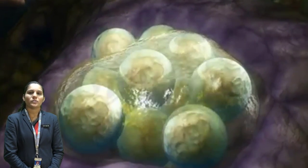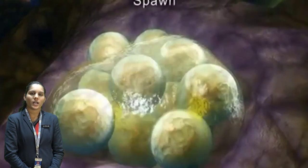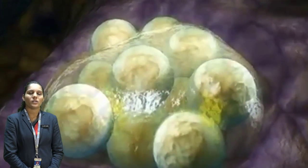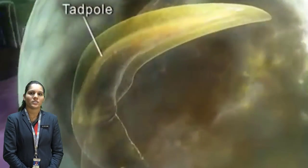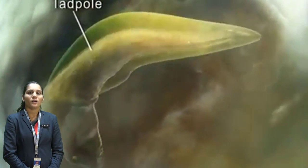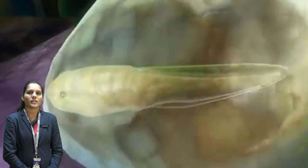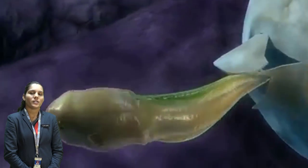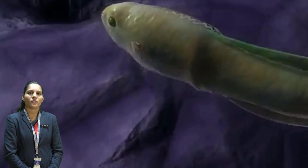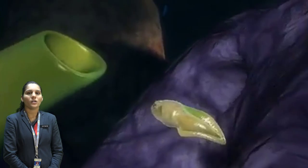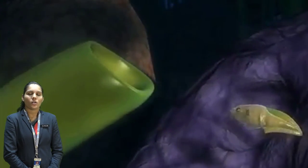The two types of fertilization we have already learned: internal fertilization, which takes place inside the female body, and external fertilization, which takes place outside the female body. That topic is already related to the life cycle of the frog, because fertilization in the frog takes place outside the female body. So let's learn about the life cycle of a frog.